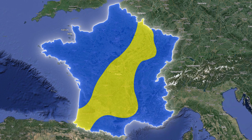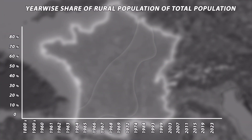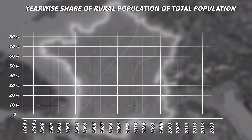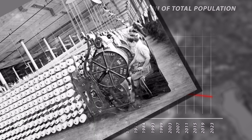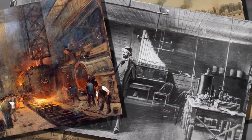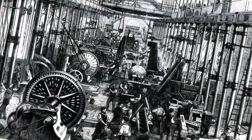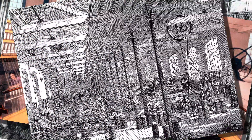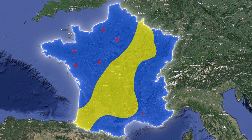So why is France so empty in the middle? The main reason for this emptiness is associated largely to the rural exodus and urbanization of the 19th and 20th centuries. As the industrial revolution took hold, people started moving away from the countryside and into the larger cities, and there are no large cities in the area represented by the diagonal.